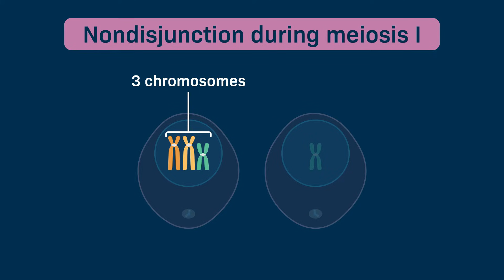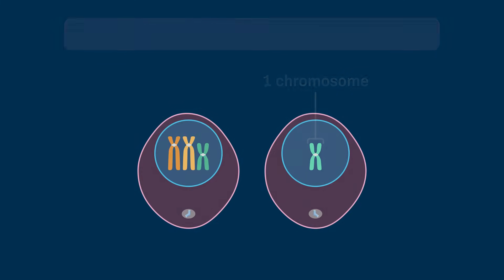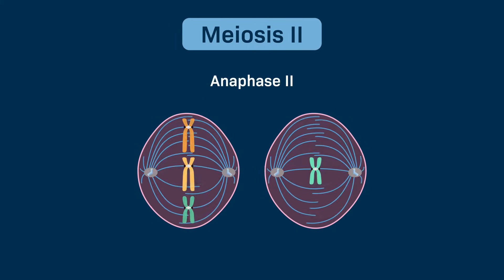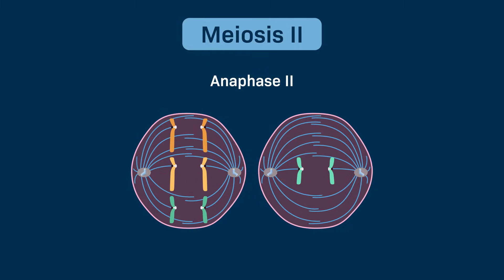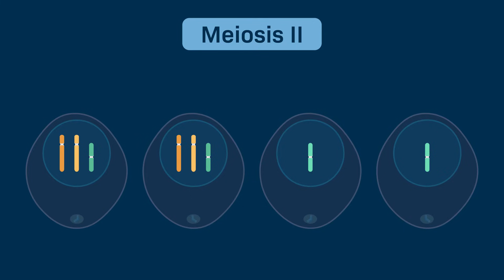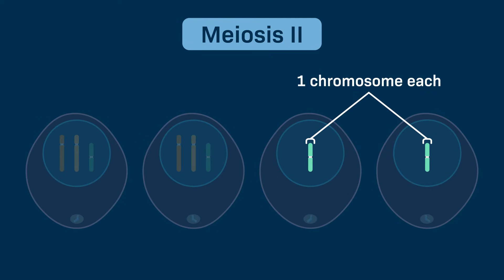In our example, one resulting cell has a total of three chromosomes and the other has one chromosome. Now let's consider the outcome if these two resulting cells undergo meiosis 2. As expected during anaphase 2, the sister chromatids separate as usual. However, the four cells that result from meiosis 2 still vary in the number of chromosomes — two resulting cells each have a total of three chromosomes, and the other two each only have one chromosome.